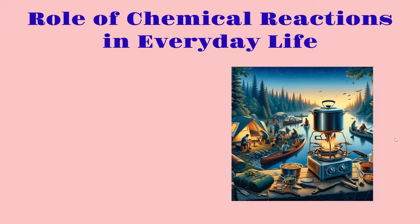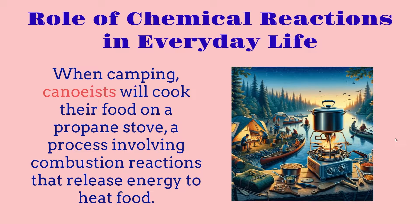To start things off in this chapter, we're going to talk about the roles of chemical reactions in everyday life, and we're going to go over two different examples. For the first example, when camping, canoeists will cook their food on a propane stove, which is a process that involves combustion reactions that release energy to heat food. Here in this picture we can see these canoeists traveling, and when they're ready to cook food they have this type of a gas stove.